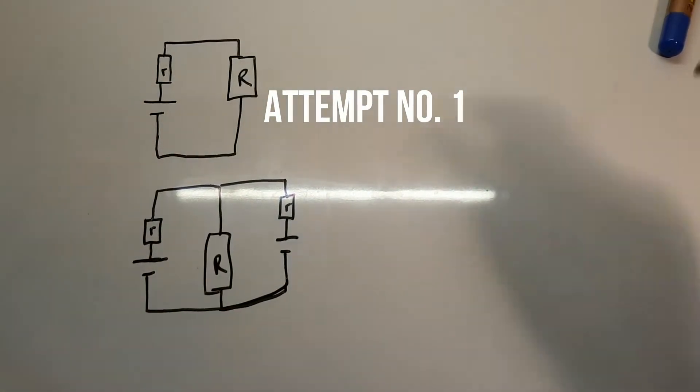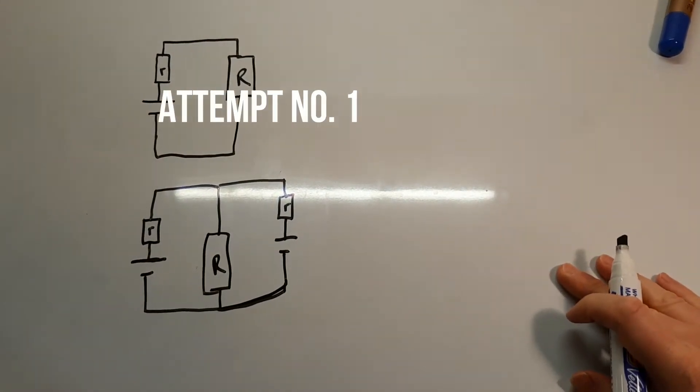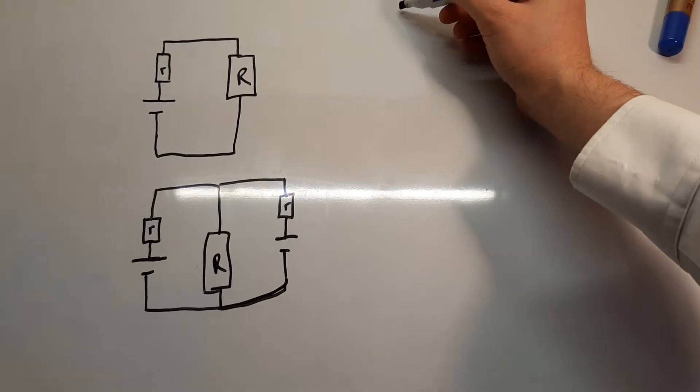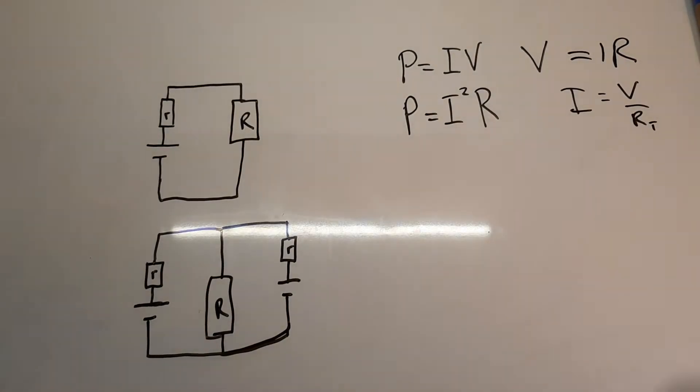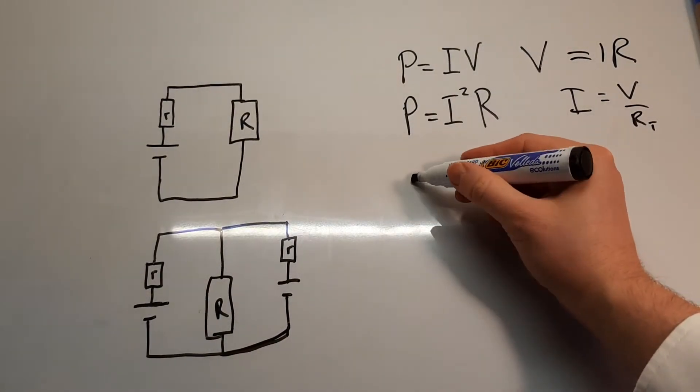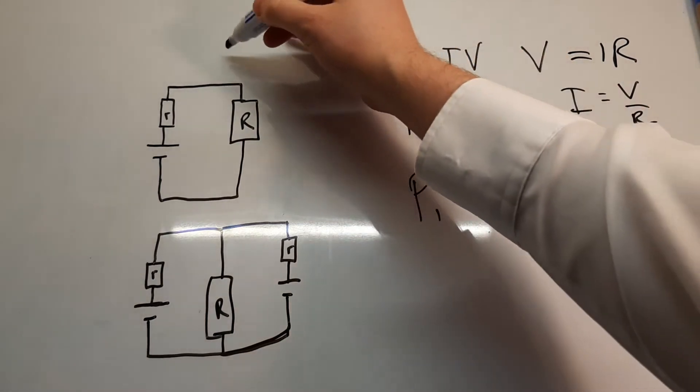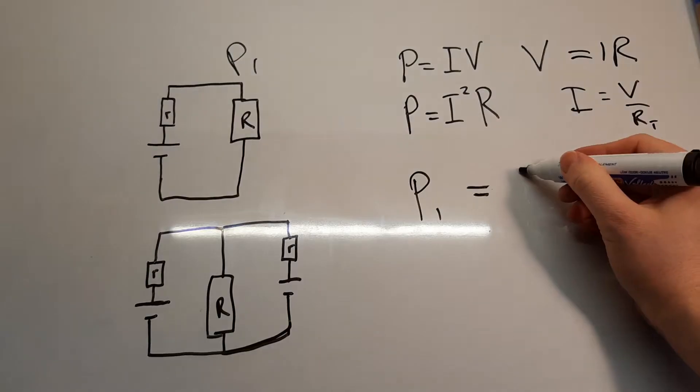So attempt number one. Okay, so a couple of equations we're going to need for this one. Let's start with P equals IV. And you're going to see why I'm putting all these things out in a second as I try and ramble these together. Okay, we've got power one. So power one is that circuit there. P equals IV. Fairly straightforward.